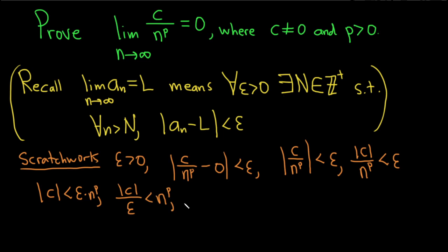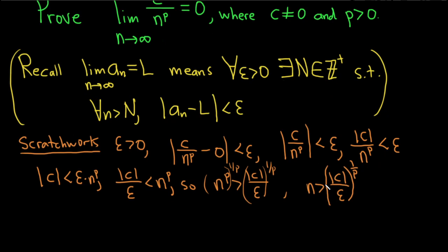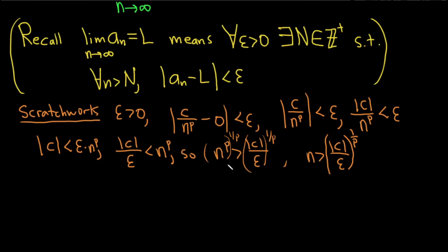Write it backwards: n to the p is bigger than the absolute value of c over epsilon. Raise both sides to the 1 over p, so we need n bigger than the absolute value of c over epsilon to the 1 over p. We need an integer bigger than this number.